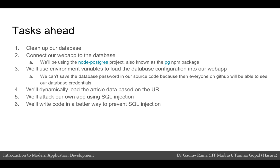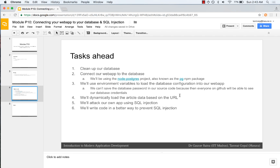The first thing we need to do is clean up our database and remove all the tables so that we can start fresh. We have to connect our web app to the database, and for that we will be using the node-postgres package, also known as the PG package on NPM, to help us connect to the database.